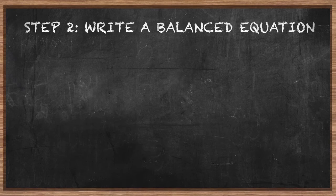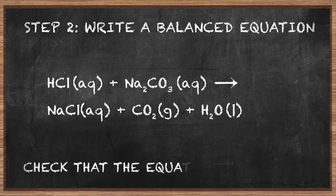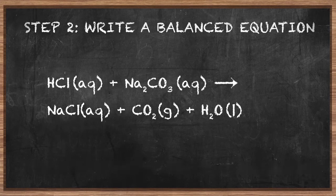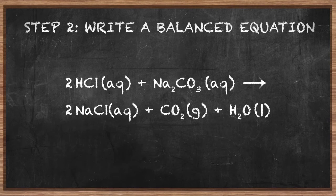Step 2: write a balanced equation. Hydrochloric acid reacts with sodium carbonate to form sodium chloride, carbon dioxide, and water. Check that the equation is balanced — we need to balance it. 2 moles of hydrochloric acid react with 1 mole of sodium carbonate to produce 2 moles of sodium chloride, and 1 mole each of carbon dioxide and water.